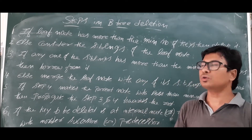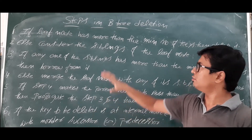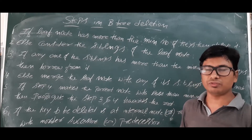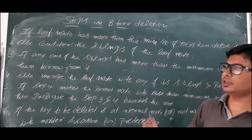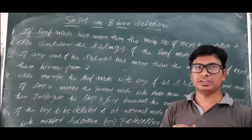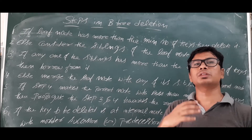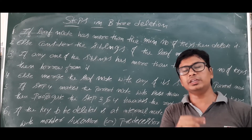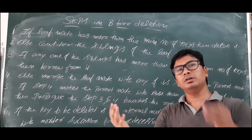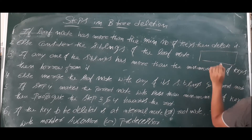If we want to delete an element or a key which is in the leaf node, we will discuss that first. Then we will discuss what to do if the element is in the non-leaf nodes. Before discussing these steps, recall that in each node we have a minimum and maximum number of keys. In deletion, we must think about the underflow condition — if you delete any element, the node should not have fewer than the minimum number of keys.